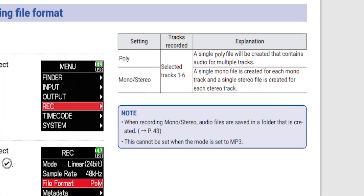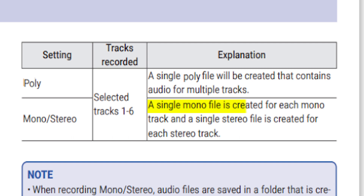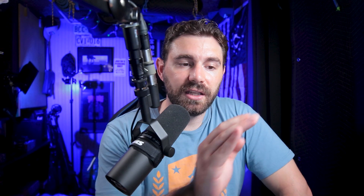Now let's explain what mono stereo is - it's a little bit more straightforward. A single mono file is created for each mono track and a single stereo file is created for each stereo track. What this means is each individual track has its own WAV file. So all of them are separate, and you have to individually bring them into the program and individually put them into the sequence.